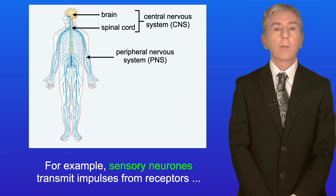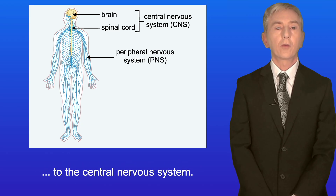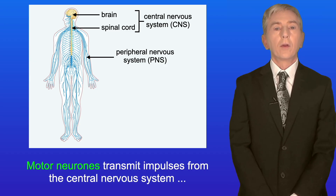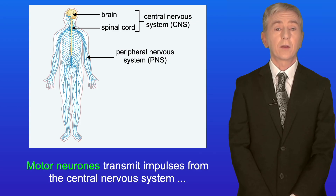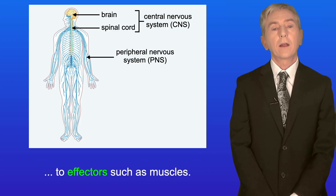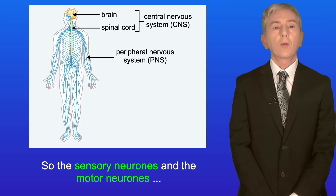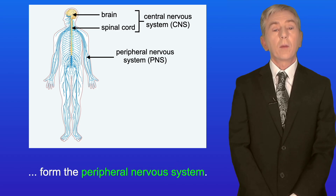The peripheral nervous system consists of the neurons that transmit impulses to and from the central nervous system. For example, sensory neurons transmit impulses from receptors to the central nervous system, and motor neurons transmit impulses from the central nervous system to effectors such as muscles. So the sensory neurons and motor neurons form the peripheral nervous system.